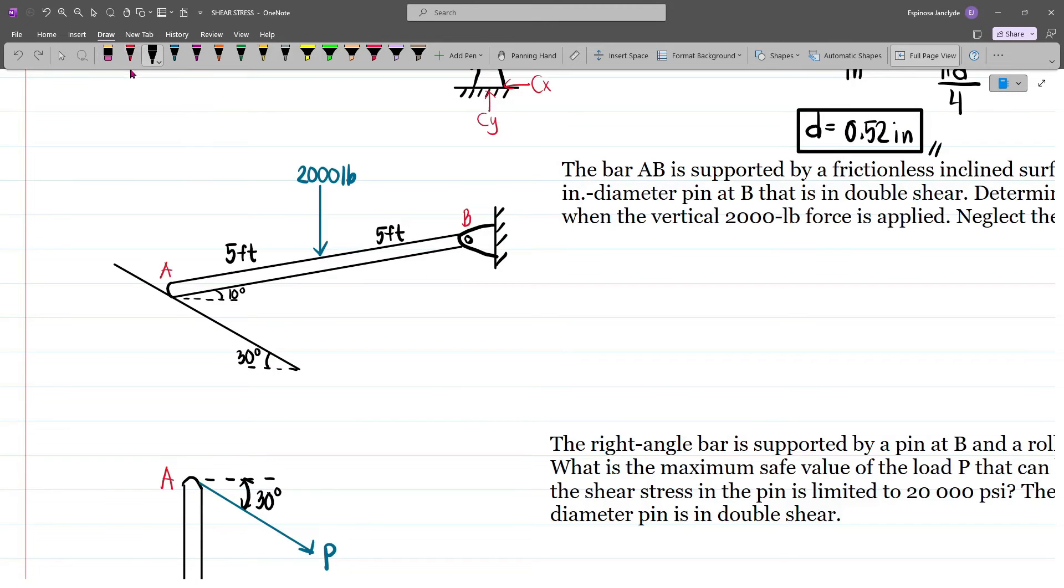Now first, let's write our external reactions. At A, we have a smooth inclined surface and so this will have a normal reaction perpendicular to the surface. However, since it is smooth, we don't have any frictional force, only a normal force. Let's make sure this is perpendicular and then this is the normal reaction at A.